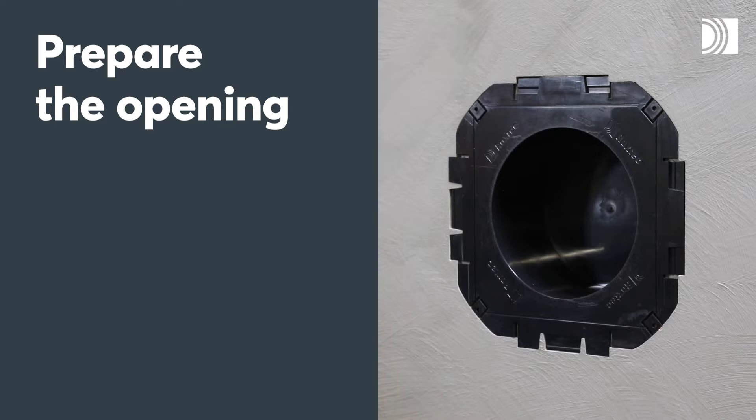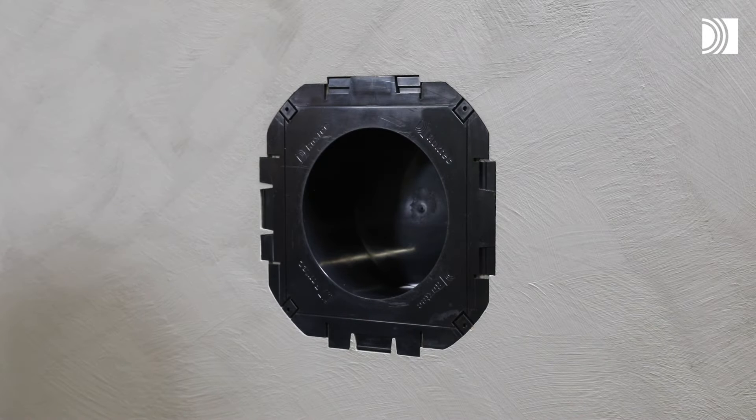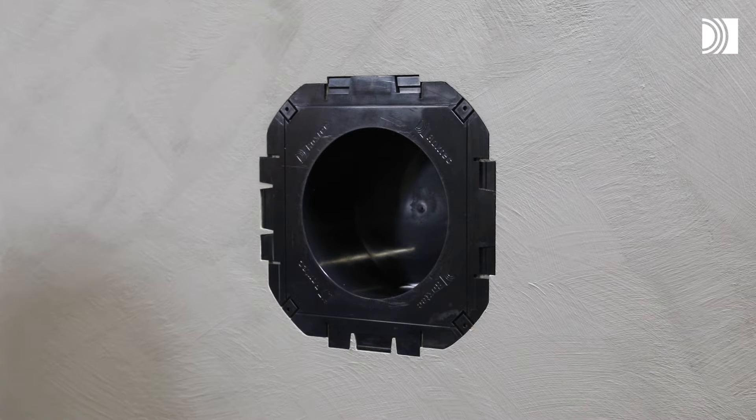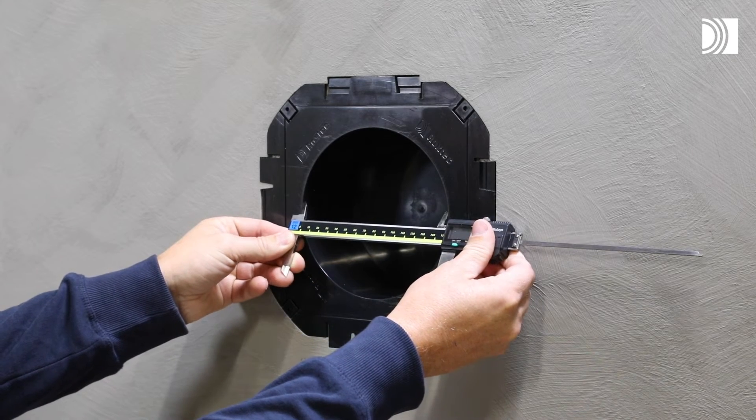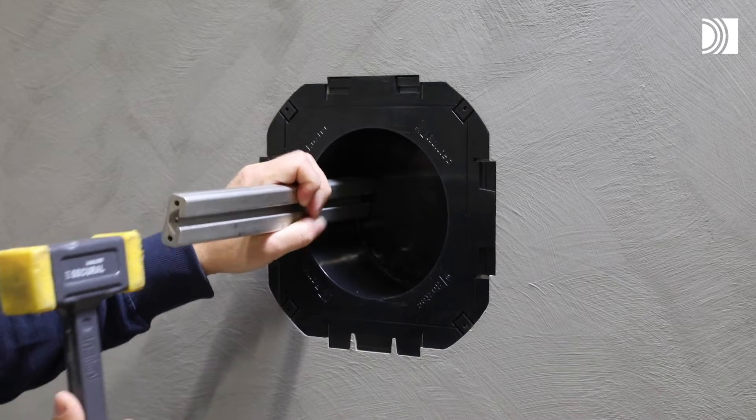Prepare the opening. In this case, the Transit is installed in a Roxtec knockout sleeve. Start by verifying the aperture. Remove the knockout of the sleeve.